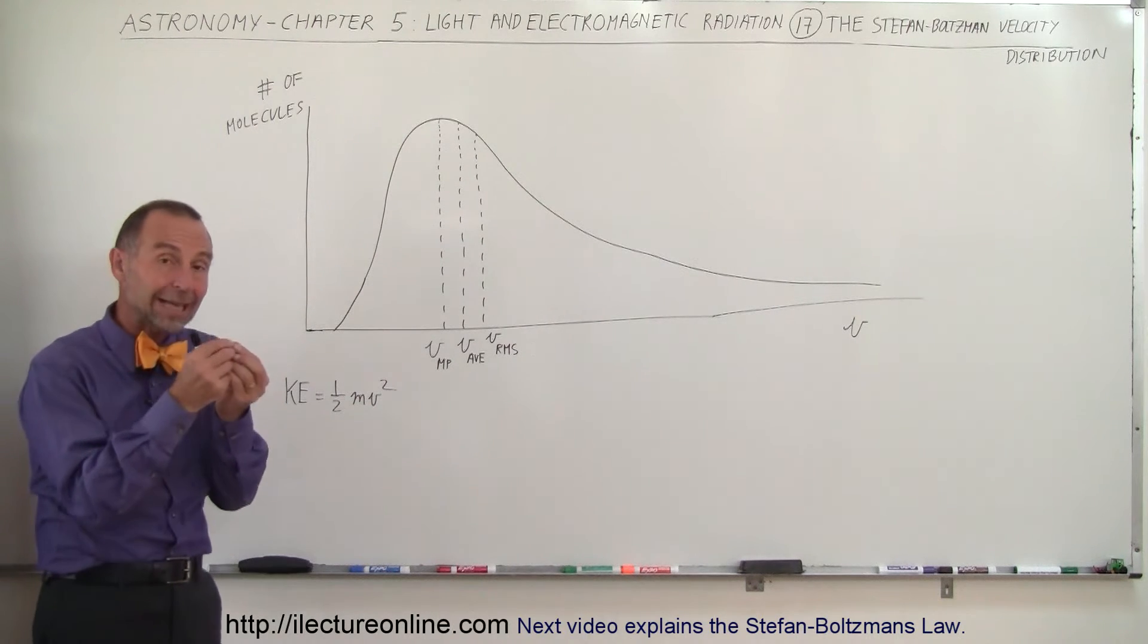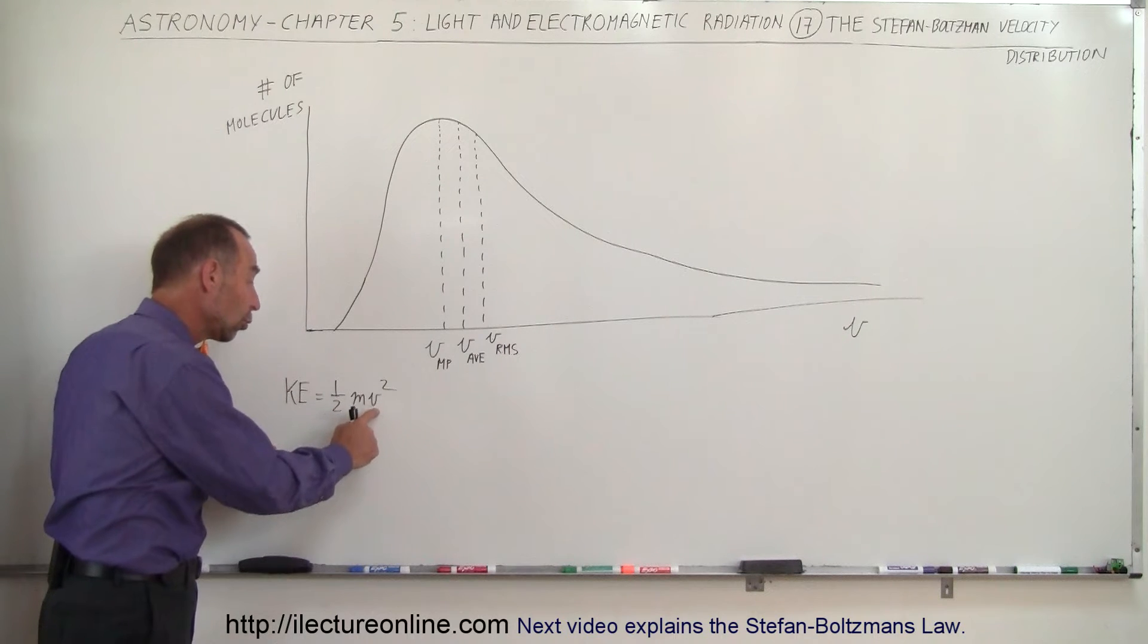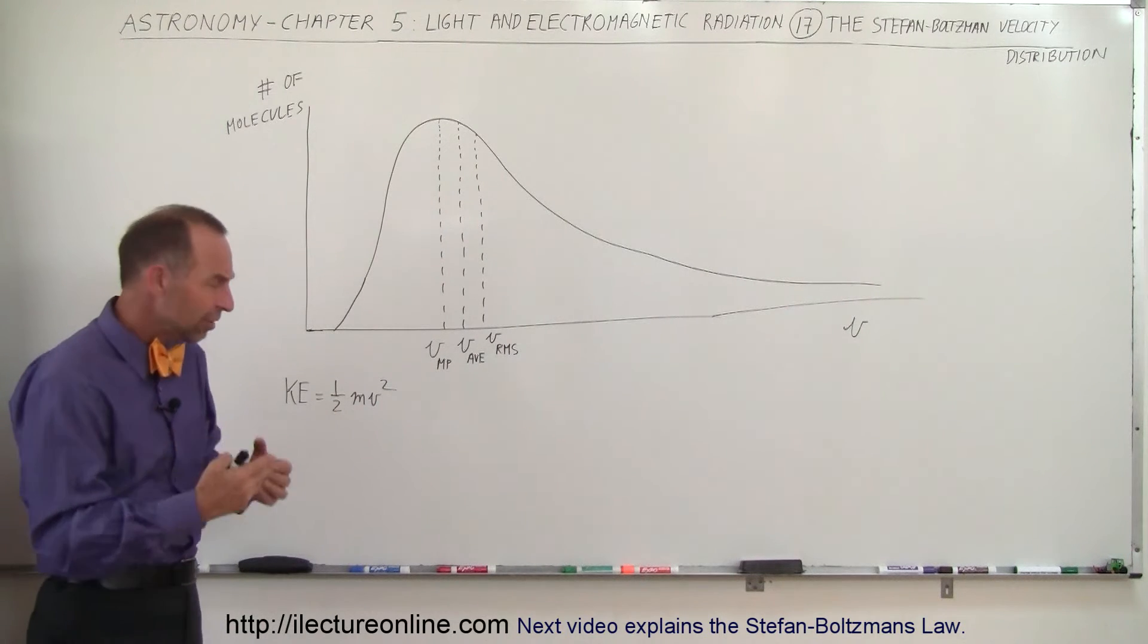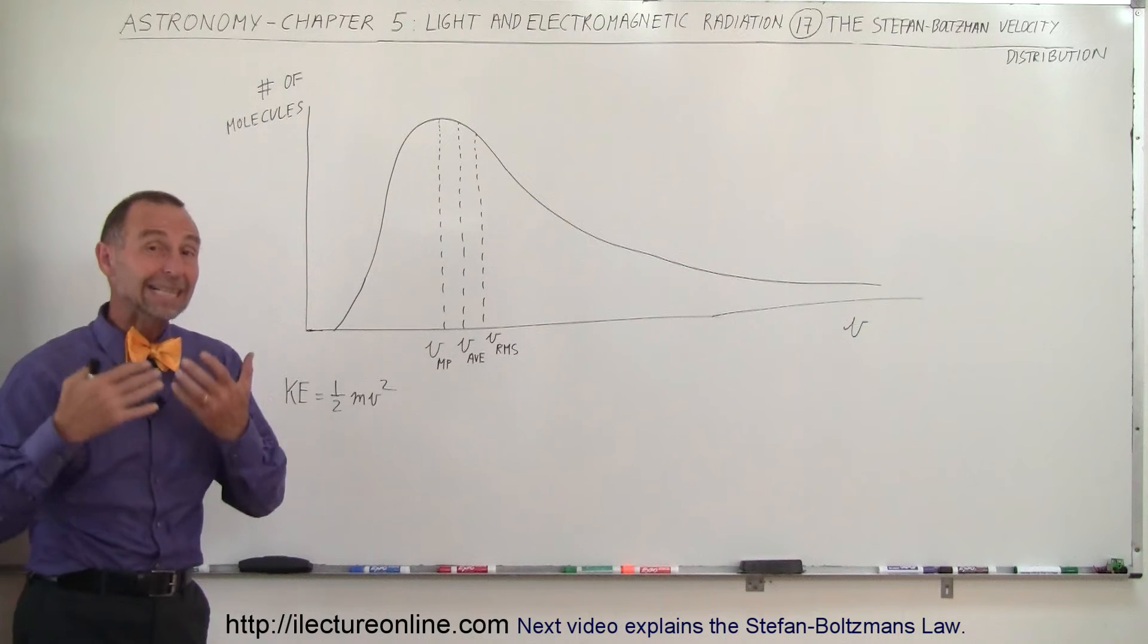which means that the energy contained within the atom depends upon the square of the velocity. You double the velocity, four times the energy. Triple the velocity, nine times the energy.